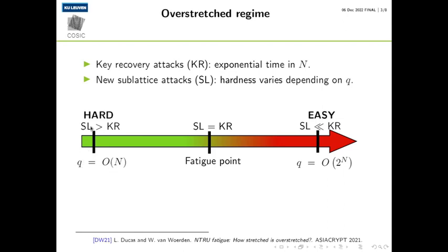The picture we have is the following: when q is linear in n, the SUBLATS attacks are very expensive and the NTRU problem is hard. But as we start to increase q, the SUBLATS attacks become very easy, and at some point the SUBLATS attack even takes polynomial time, so the NTRU problem becomes easy. There is a turning point where the SUBLATS attacks cost essentially the same as the Q-recovery attack, and we call this the FATIC point.